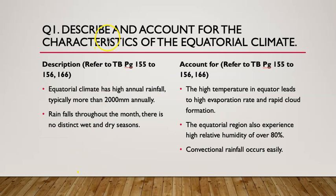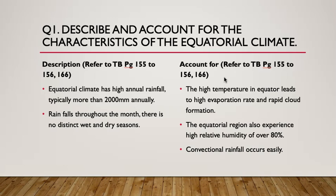The next major component to describe is the rainfall of the equatorial climate. Equatorial climates experience high annual rainfall, typically more than 2000 mm, and there is rain every month. There is no distinct wet and dry season — it is quite evenly spread out. In the textbook, the climograph shows relatively even monthly rainfall, except towards the year end. You have to describe the characteristic followed by the explanation. You may pause the video now to read the textbook pages 155 to 156 on conventional rainfall, before we go on to question 2, which is on comparison.